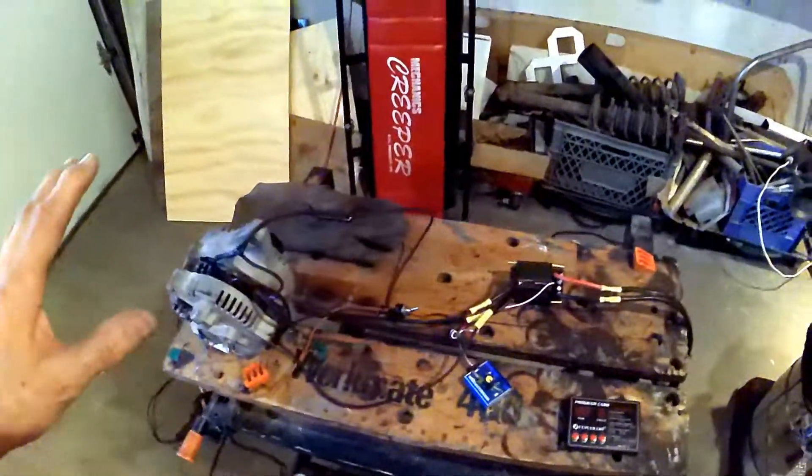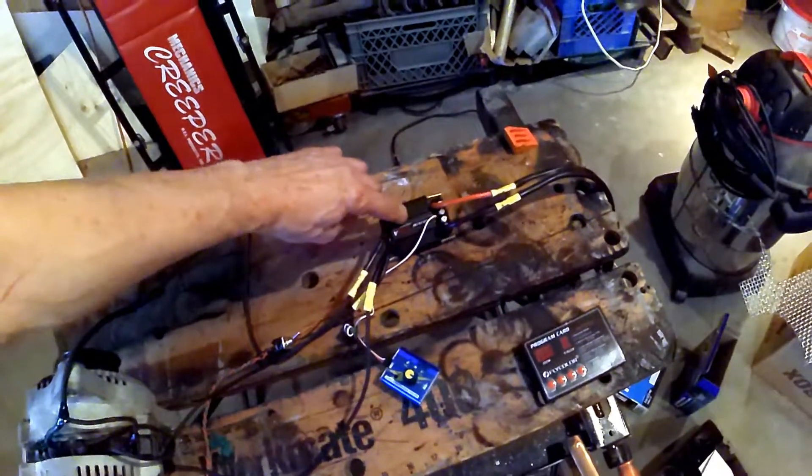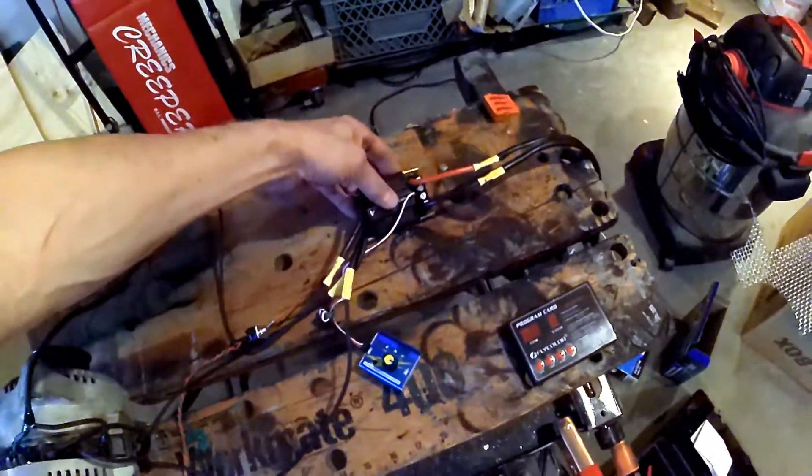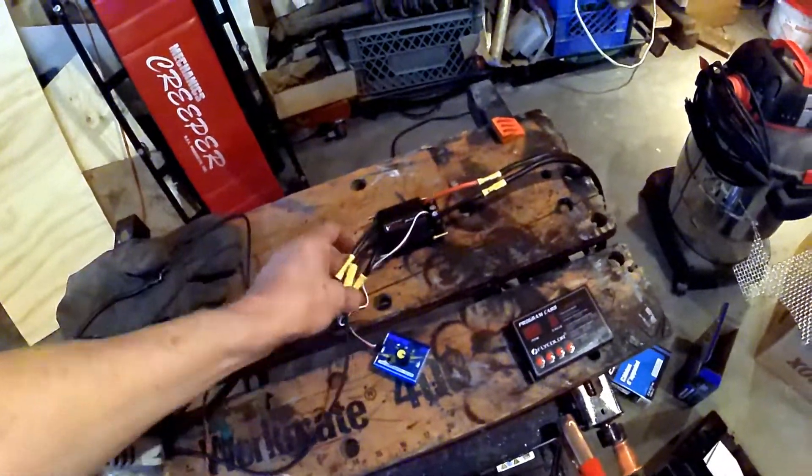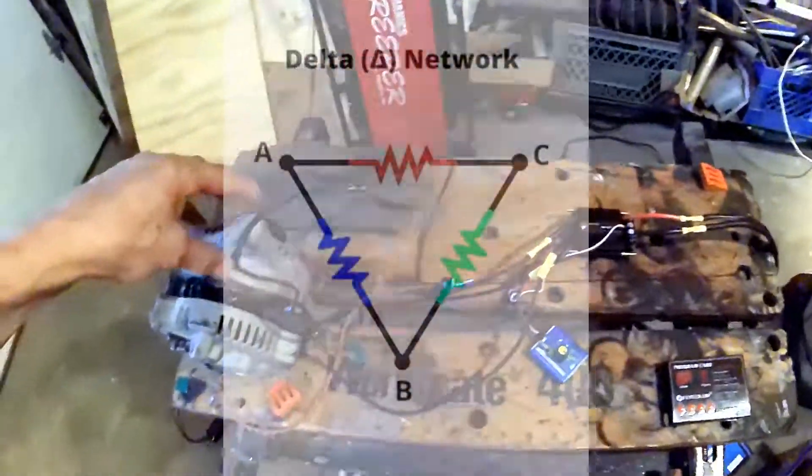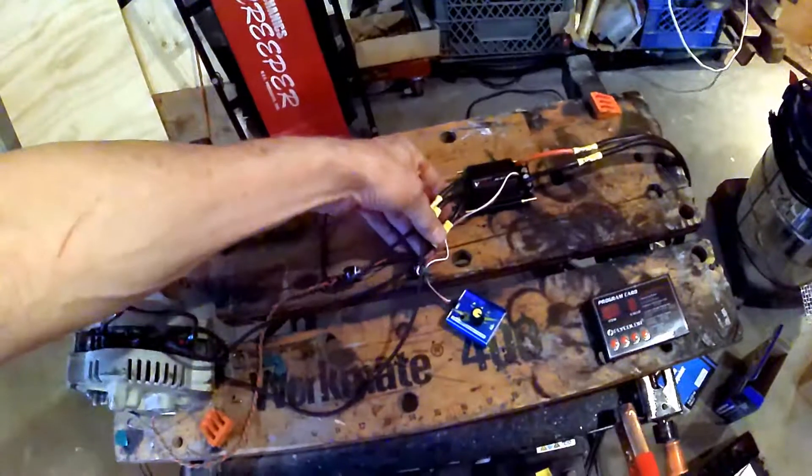I've got an ESC, an electronic speed controller, and it has three outputs—these are the three phases. The three phases go to the corners of the delta configuration, so it's pretty straightforward.